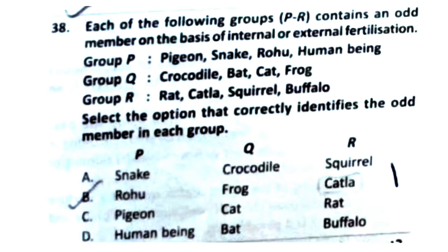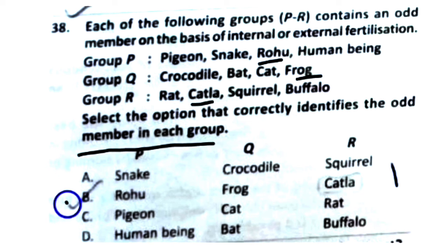Question 38: Each group contains an odd member based on internal or external fertilization. Group B contains pigeon, snake, and human being — all have internal fertilization except snake, making snake the odd one. Group Q contains crocodile, bat, cat, and frog — frog has external fertilization, so frog is the odd one. The right answer is Option B.